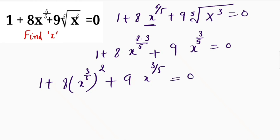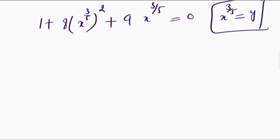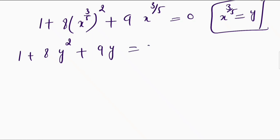Now let me substitute x raised to the power 3 by 5 equals to y. So here I will get 1 plus 8y squared plus 9y is equal to 0.